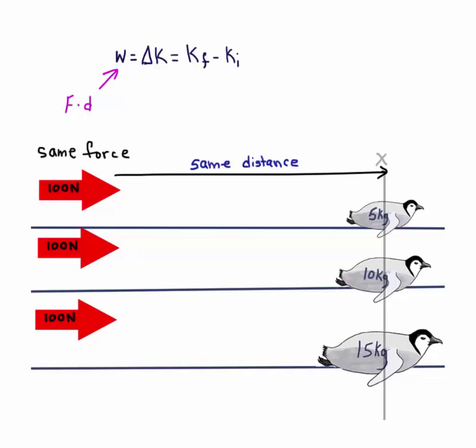Work is equal to force times distance. We have the same force and the same distance, and hence the same work. According to the work kinetic energy theorem, work done on the penguins is equal to their kinetic energy. Hence, the change in kinetic energy is the same for all penguins.